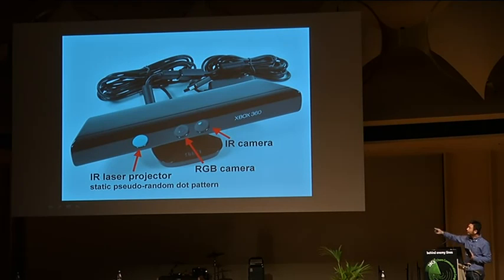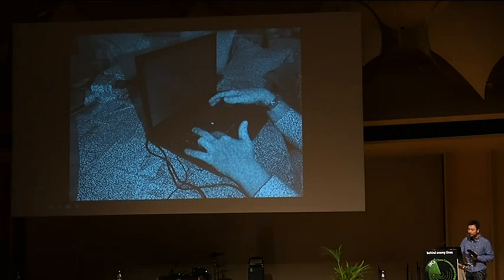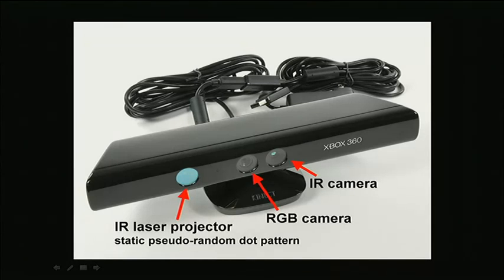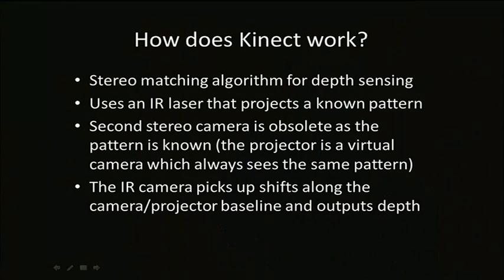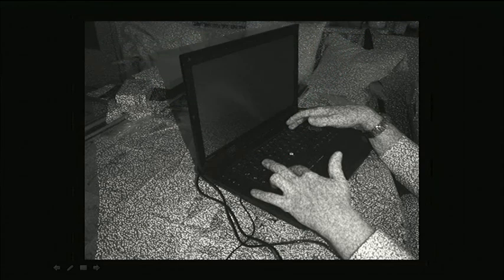The Kinect camera has an infrared laser projector and a color RGB camera — the RGB camera doesn't do anything for depth calculation, it's just for augmenting 3D graphics with color. The IR camera is what picks up the speckle pattern. You might think: how is this stereo if it only uses a single infrared camera? The infrared laser projects a random pattern, but it's like having a camera looking through the lens of the laser projector, so the projector becomes virtually the second video camera. The depth calculation happens on the device.